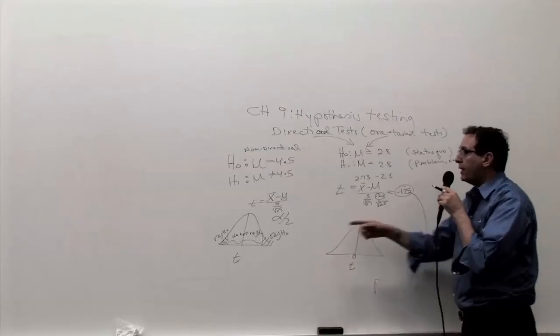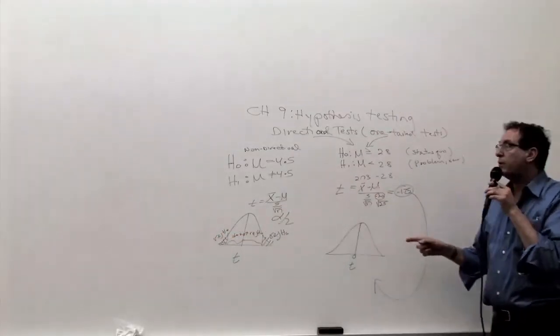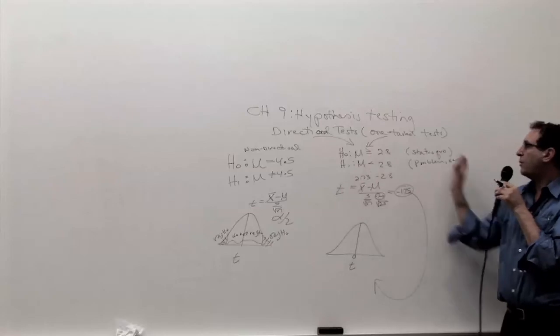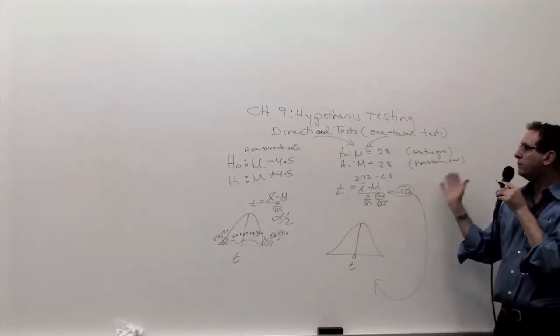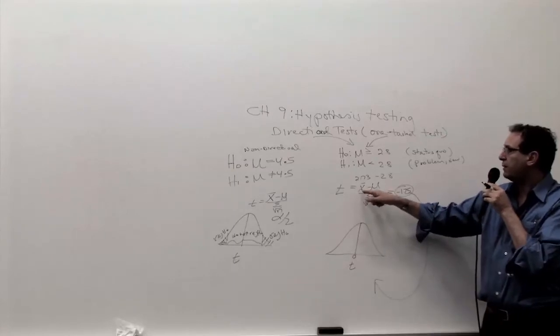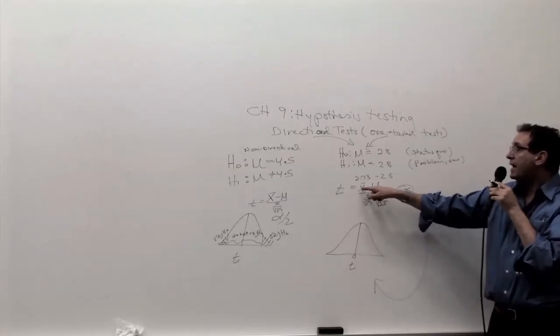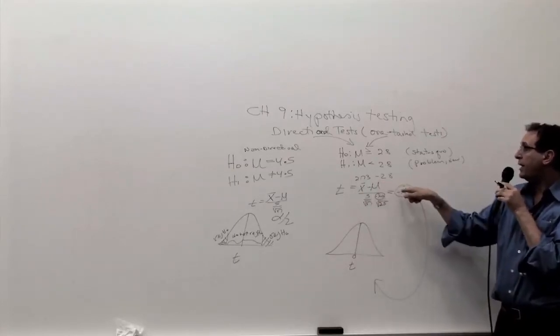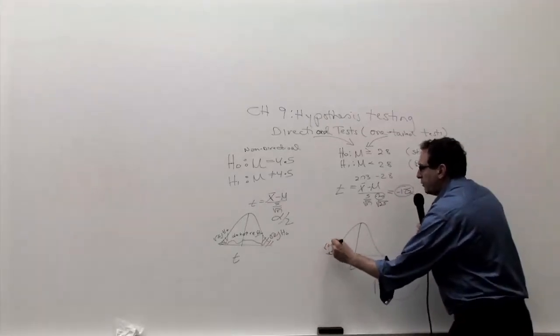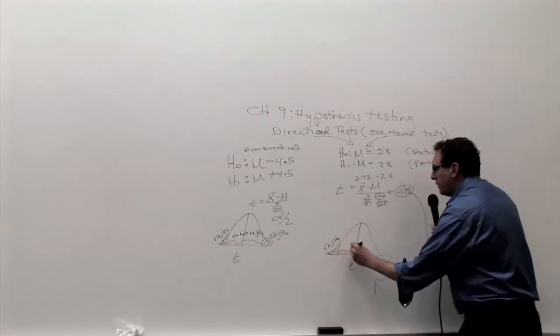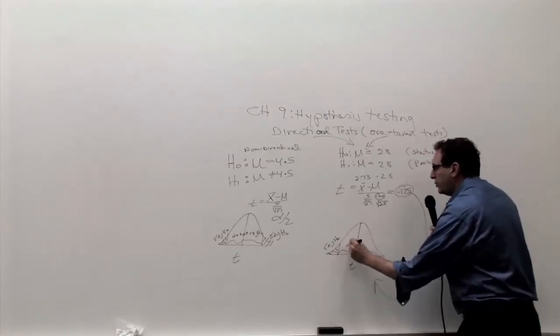And you make your rejection regions. Now, last time we made them on both sides. But now we're not making them on both sides. We're making them on one side because if your x-bar is much bigger than 2.8, you end up accepting the H0. If it's much lower than 2.8, you reject the H0. So any x-bar lower than 2.8, which is a negative number, so the rejection region is only on one side. And this is the reject region. But everything else from here all the way to the end, it will now be do not reject H0.